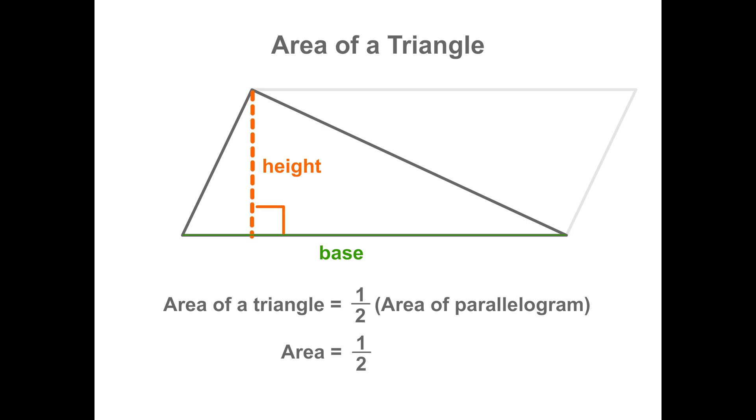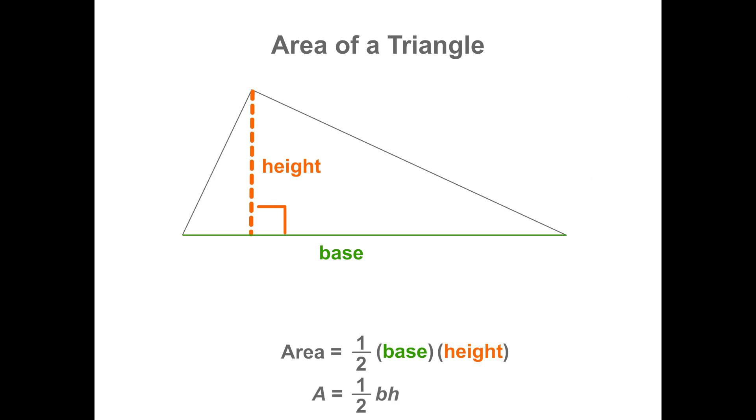Or one half times the base times the height. The area of the triangle depends only on the lengths of the base and height, not all three sides. So any two triangles that have the same base and height will always have the same area.